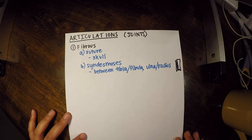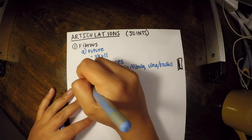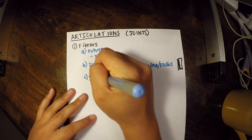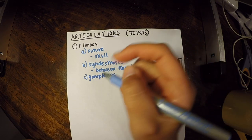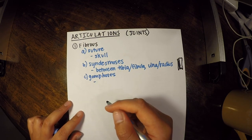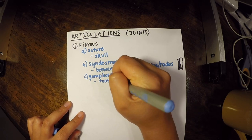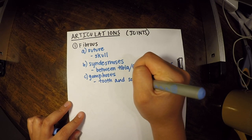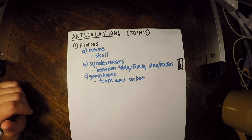The last type of fibrous joint is a gomphosis. 'Gom' kind of sounds like 'gum,' so that's how you can remember that an example is the tooth and socket. That's our first category — fibrous joints.